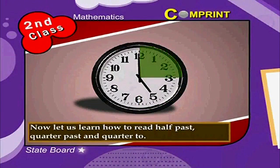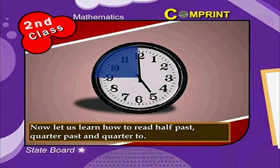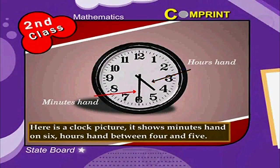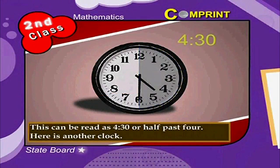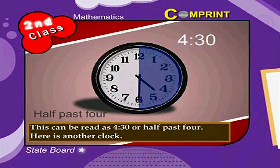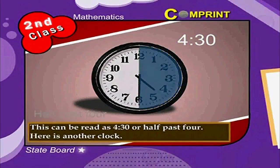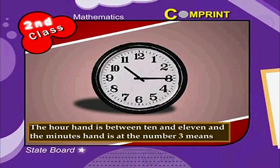Here is a clock picture. It shows the minute hand on 6 and the hour hand between 4 and 5. This can be read as 4:30, or half past 4.